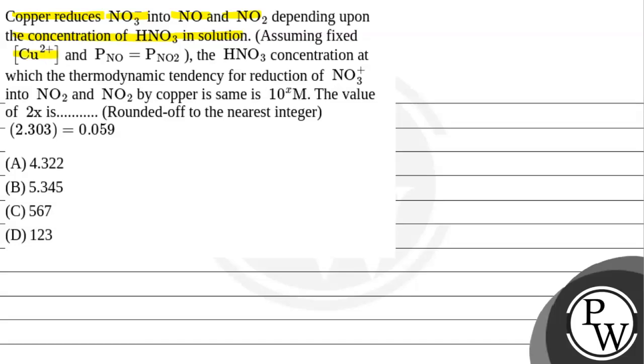The question says copper reduces NO3- into NO and NO2 depending upon the concentration of HNO3 in solution. Assuming fixed Cu2+ and pressure of NO equals pressure of NO2, the HNO3 concentration at which the thermodynamic tendency for reduction of NO3- into NO2 and NO2 by copper is same is 10 to the power x. The value of 2x is: option A 4.322, option B 5.345, option C 567, option D 123.